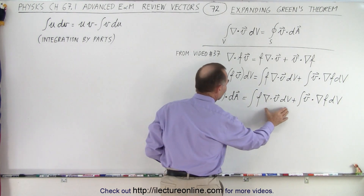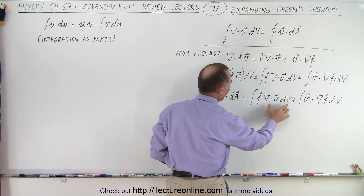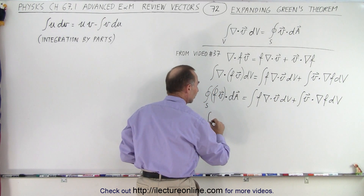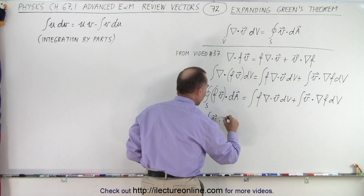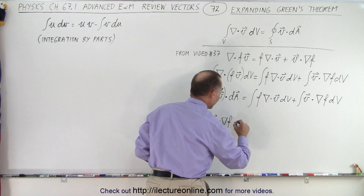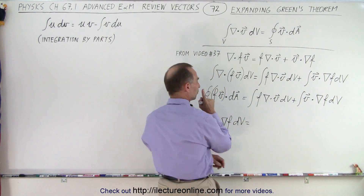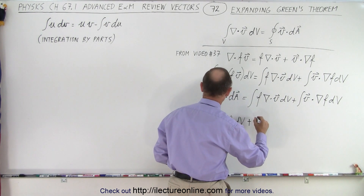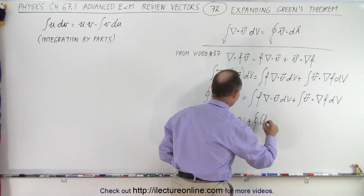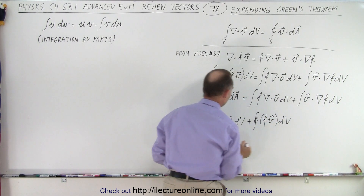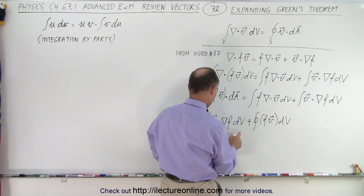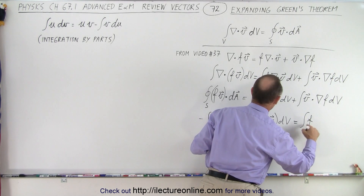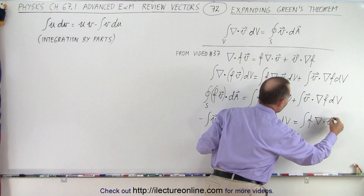We want to isolate that on one side. We can leave the f times divergence of V term on the right side and move the other term over, making it negative. So we take that term and write: minus the integral of V times the gradient of f dV, plus the surface integral of f times V dA, equals the integral of f times the divergence of V dV.